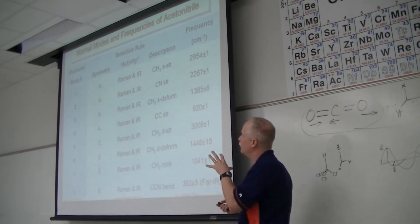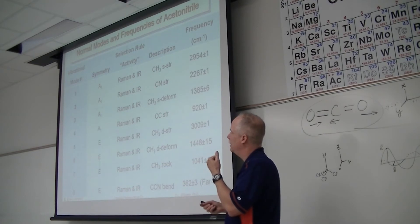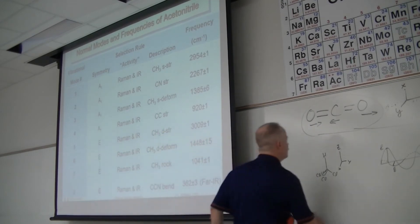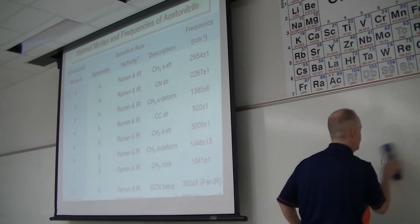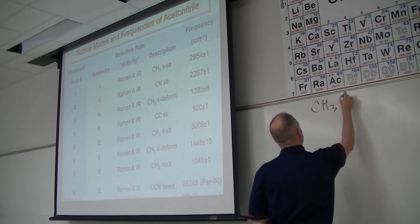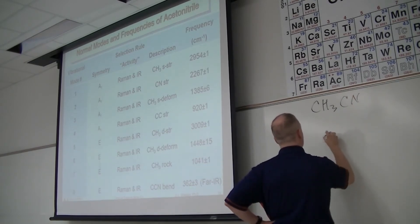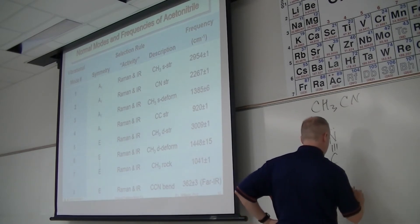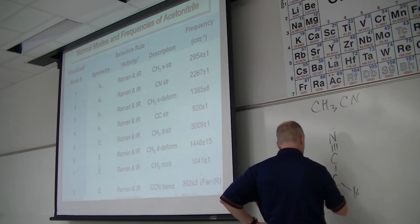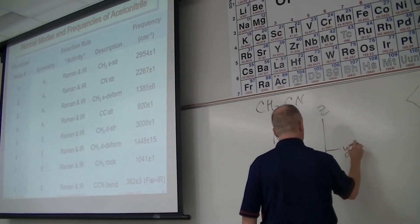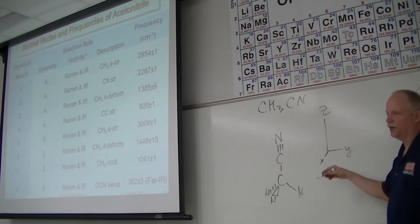These are the vibrational modes for acetonitrile. Let's calculate how many there should be. Draw acetonitrile: CH₃CN. It has a three-fold symmetry axis. What's the point group? C3V — C3 for the three-fold axis and V because it has three vertical reflection planes. N equals 6, 3N equals 18, minus 6 for a nonlinear molecule gives 12 vibrations.